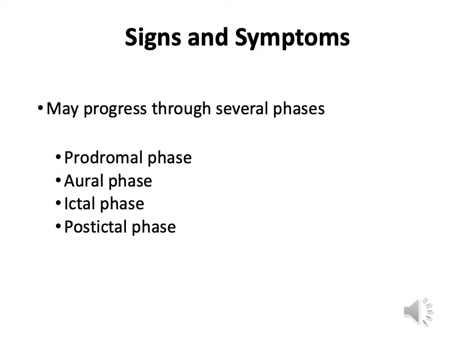A client suffering from a seizure may or may not go through all of these phases. The prodromal phase is just that phase where they have a sensation that something's not right. The aural phase is where they have a sensation like a smell or something along those lines that is a predictor to the actual seizure. The ictal phase is the seizure itself, from the time it starts until the time it ends. And the post-ictal phase is just after the seizure, and we'll go into a few signs and symptoms of that.